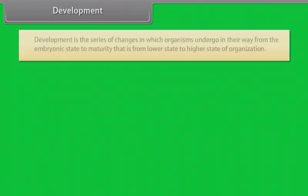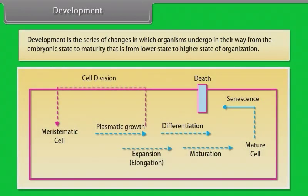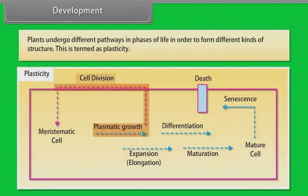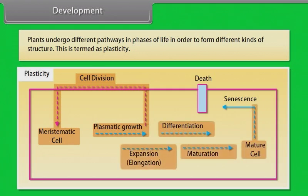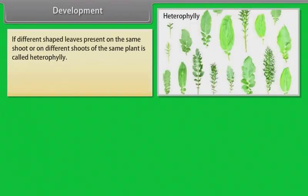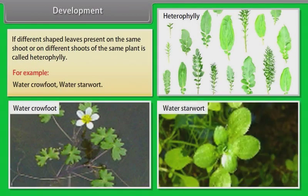Development. Development is the series of changes in which organisms undergo in their way from the embryonic state to maturity, that is, from lower state to higher state of organization. Plants undergo different pathways and phases of life in order to form different kinds of structure. This is termed as plasticity. If different shape leaves present on the same shoot or on different shoots of the same plant, it is called heterophylly. For example, water crowfoot, water starwort.